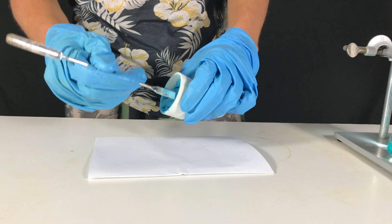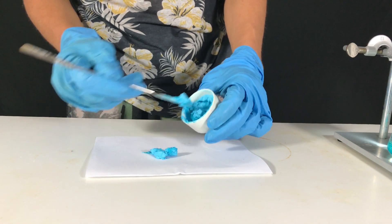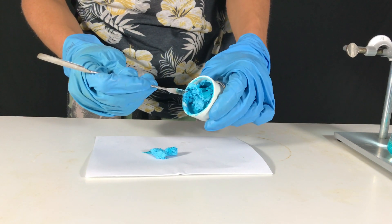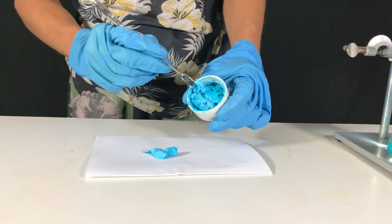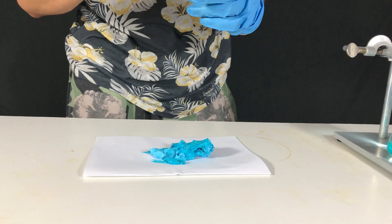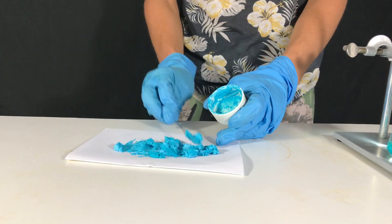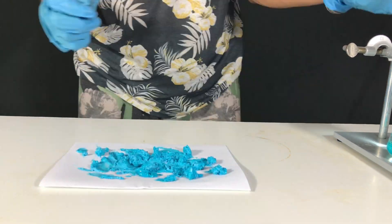For drying, the copper benzoate still containing some isopropanol was again transferred to a piece of paper. It was spread out to maximize the surface area.